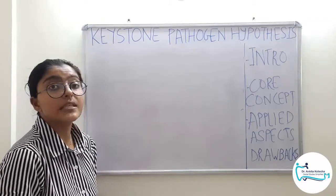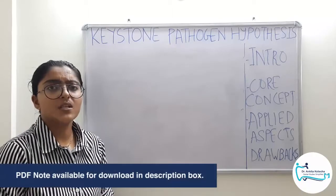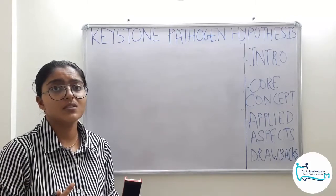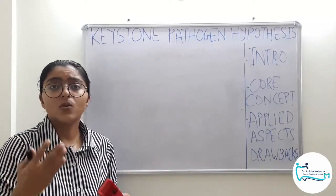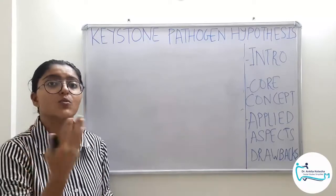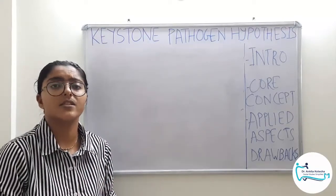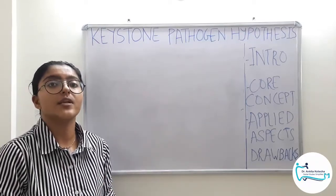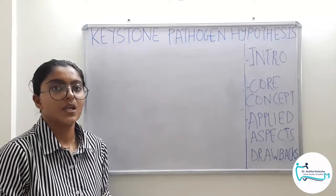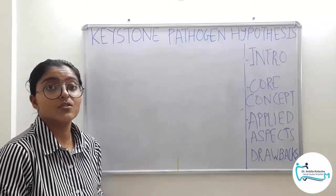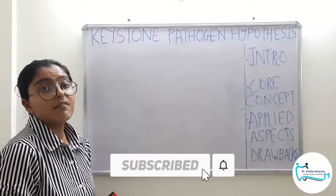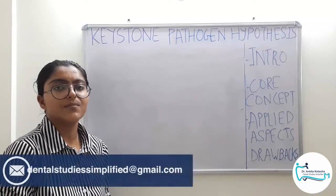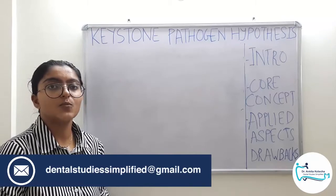This completes the Keystone Pathogen Hypothesis. In brief summary: George Haji Shingalis in the year 2012 gave the Keystone Pathogen Hypothesis; keystone refers to microorganisms at low levels and low abundance; the most important keystone pathogen is P. gingivalis; the three main mechanisms are TLR-4 response manipulation, interleukin-8 subversion, and corruption of the complement system. If you have any doubts or queries, please ask in the comment section below or mail at dentalstudies simplified at gmail.com. Thank you for watching and study well. Have a good day.